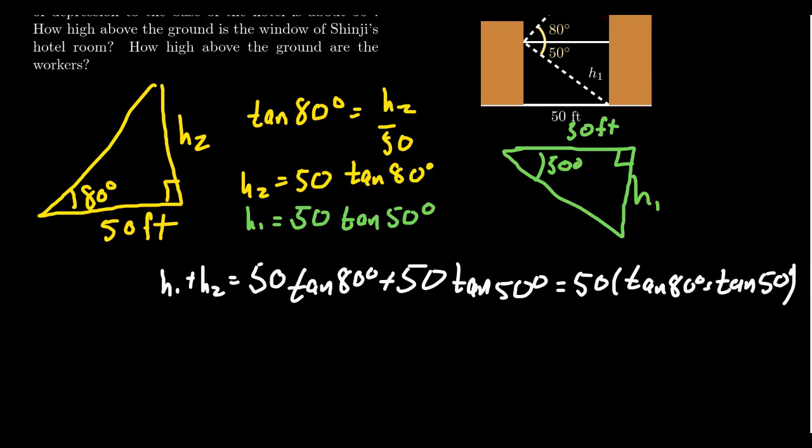And so if we need an estimate like Shinji does here, we should use a calculator. So Shinji is just going to pull out his smartphone, which has a calculator app on it. And so making sure the calculator is in degree mode here, Shinji or ourselves would type in tangent of 80 degrees plus tangent of 50 degrees equal and then times that by 50. And then the calculator would tell us that the height of the window washers would be approximately 343.2 feet above the ground.